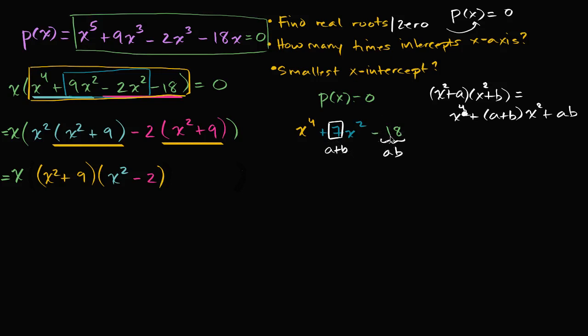What jumps out at me is nine times negative two. You multiply those, you get negative 18. You take their sum, you get seven. So we can rewrite this, looking at this pattern, as x squared plus nine,